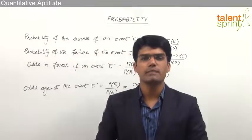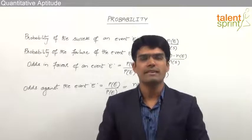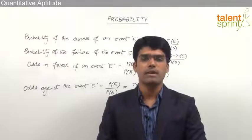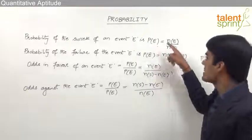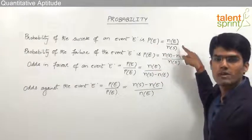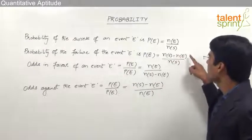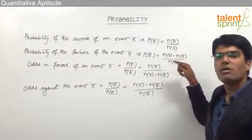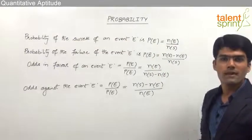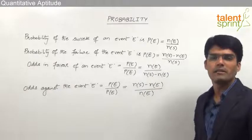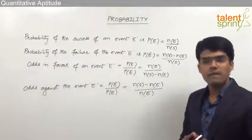Sometimes instead of directly giving the probability of success or failure of a particular event, the odds in favor of the event or the odds against the event are given. So let us see what is meant by odds in favor of an event or odds against the event. The probability of success of event E is P(E) = N(E)/N(S), and the probability of failure is P(E bar) = [N(S) − N(E)] / N(S).